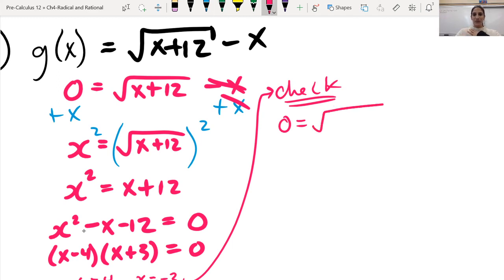So let's go ahead and check this one first. So I'm going to say root, and instead of x, I'm going to plug in 4. And then plus 12. And then the whole thing would be minus 4. And I'm trying to see if this works out.